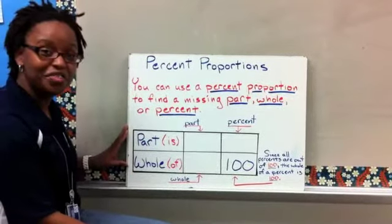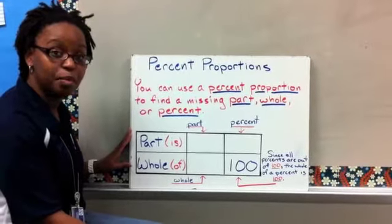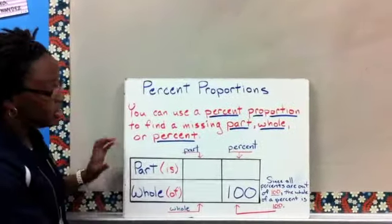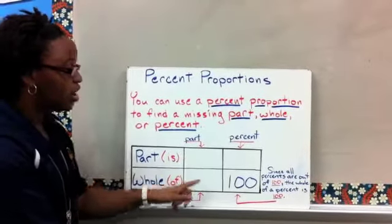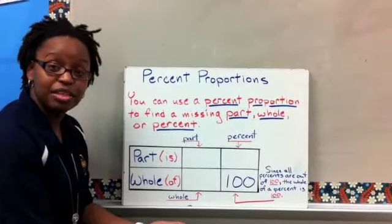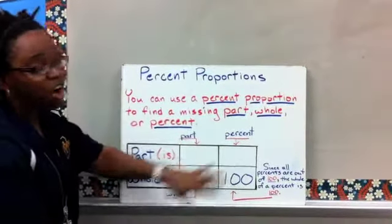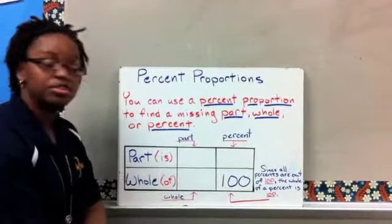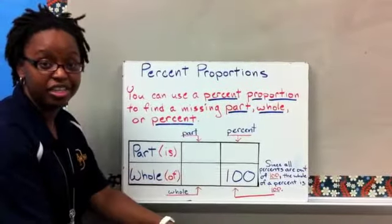This table should look a little familiar because we've used our tic-tac-toes and our word ratios to set up proportions before. The percent proportion is no different. There are two main parts: our part and our whole. The part and whole will be depending on the problem, whether that's part of the price of something or part of our class. But percent is always the same. Our percent is always the part and we know that all percents are out of 100, and so the percent whole will always be 100.